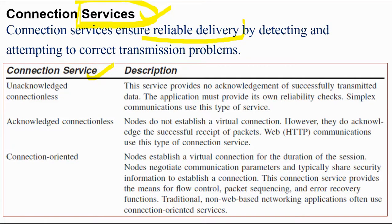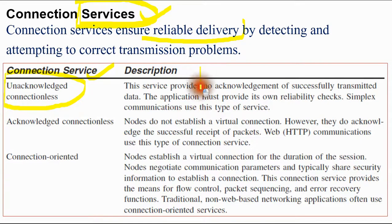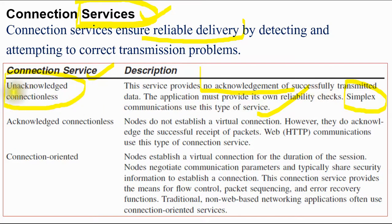The first connection service is unacknowledged connectionless service. This service provides no acknowledgement of successfully transmitted data. The application must provide its own reliability check. Simplex communication uses this type of service. So there is no acknowledgement — that is why it is called unacknowledged connectionless service.